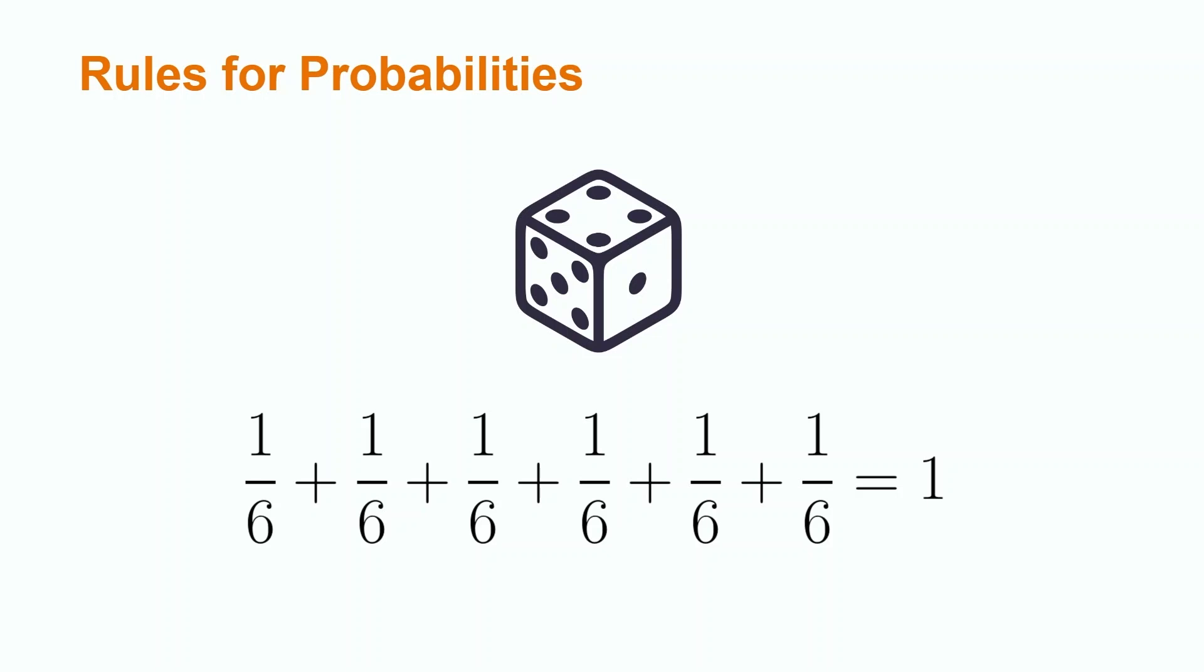When considering all potential outcomes of a random circumstance, adding the probabilities of each outcome must equal 1. For example, when rolling a die, we have 6 potential outcomes: 1, 2, 3, 4, 5, and 6. Each outcome has a 1 out of 6 chance of happening, and when we add 1 over 6 six times, this gives us a probability of 1.